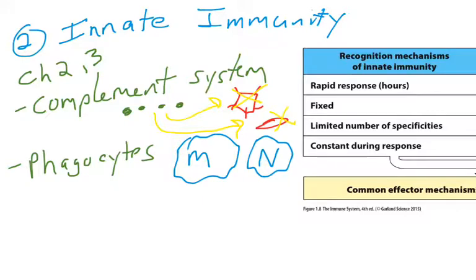Innate immunity also covers phagocytes — cells like macrophages and neutrophils. These cells also have the ability to recognize pathogens, and their effector function involves phagocytosis to destroy pathogens. We're going to cover them as well in Chapters 2 and 3.